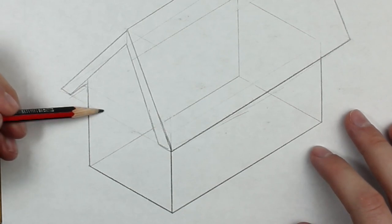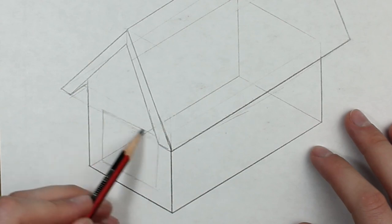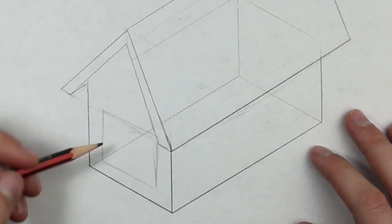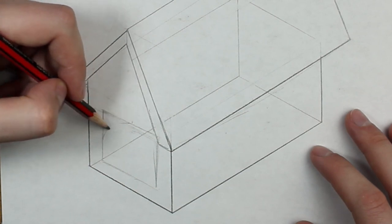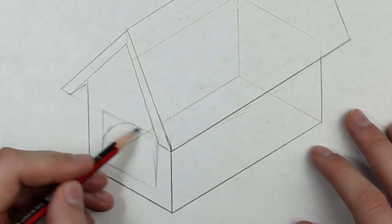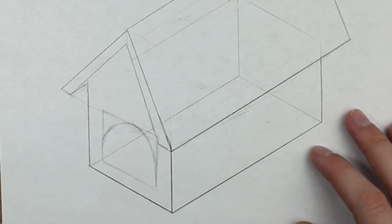So this time, because my window will be flat, I'll just need to draw a rectangle on the wall. Then I'll mark out the center just to help me keep it even. And I'll draw two curves either side of the center. And then rub out the construction lines.